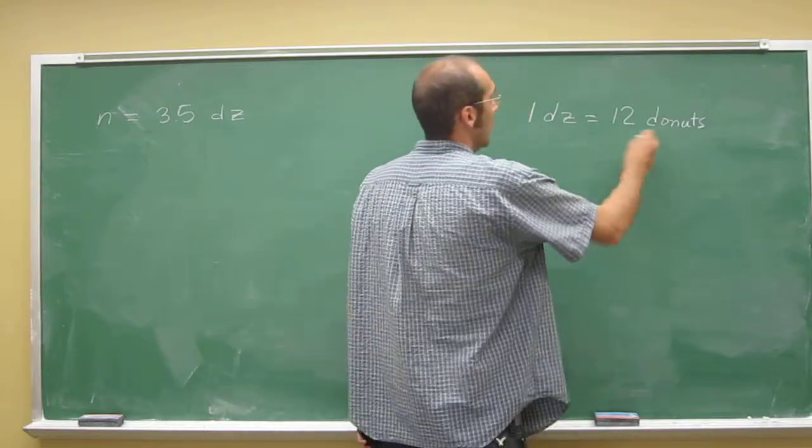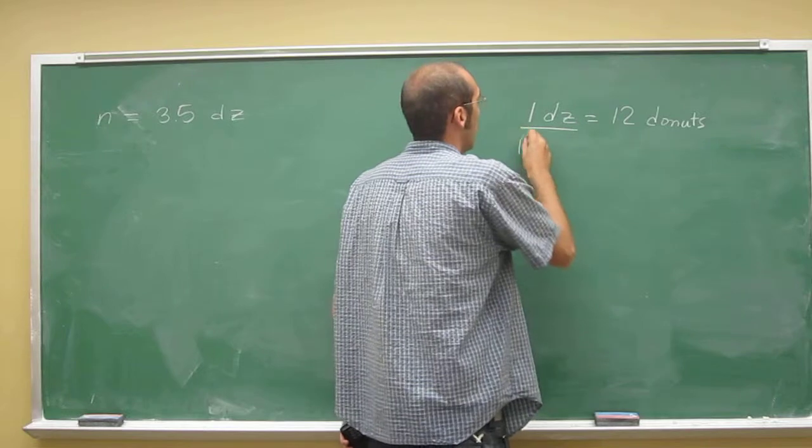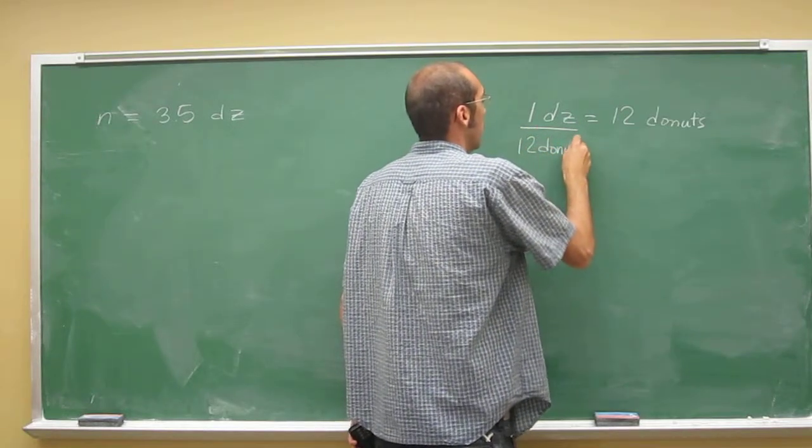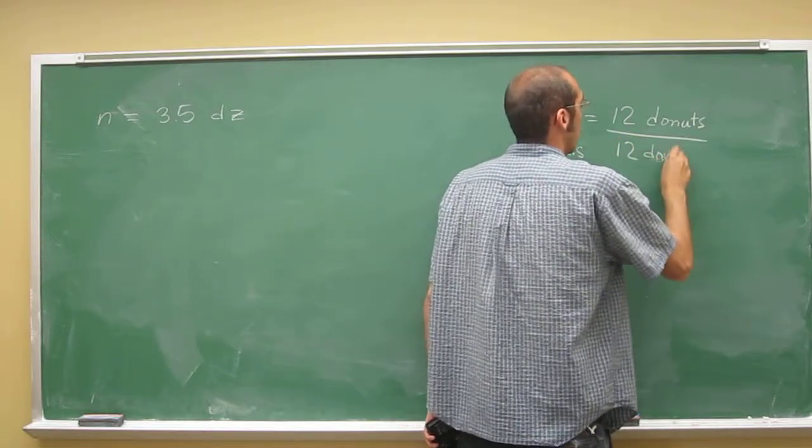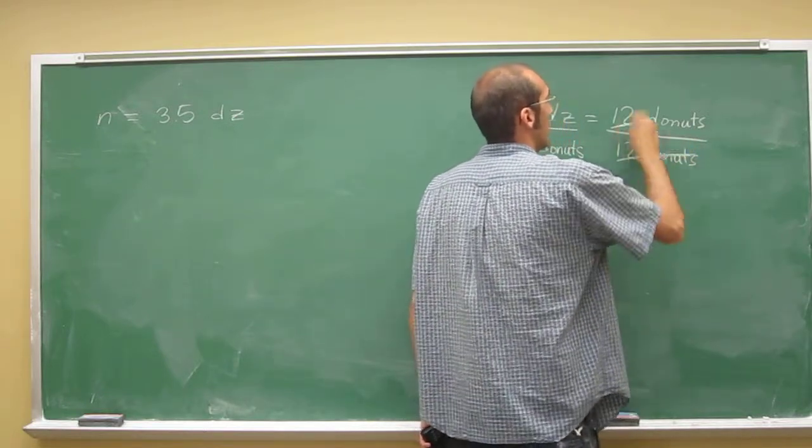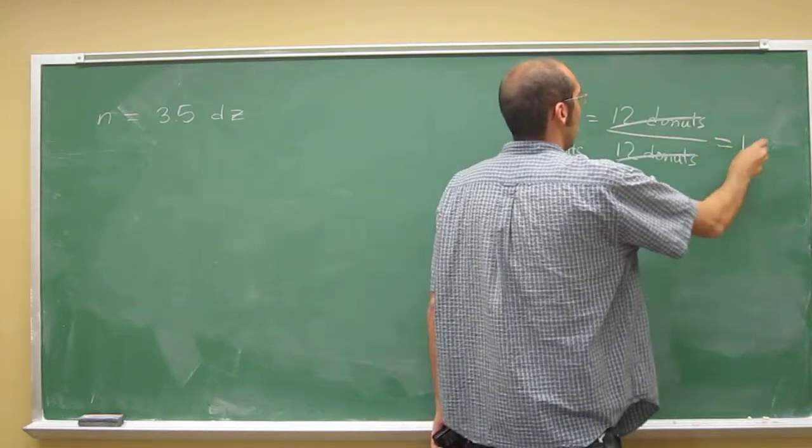Well, we can say divide both sides by 12 doughnuts. And of course, 12 doughnuts over 12 doughnuts cancels out to give you 1.